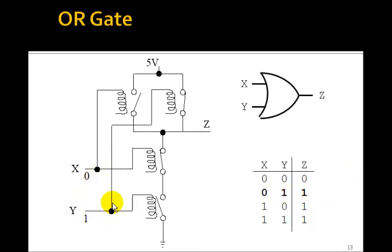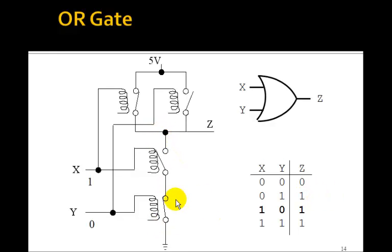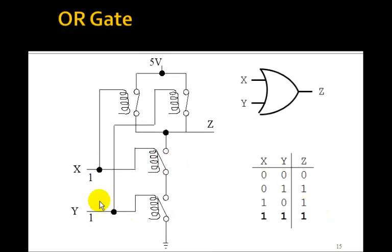If we make Y1, that closes this one, so now we have a connection up to 5 volts. It opens this one, which breaks the connection to ground, so the output would be 1. If X is 1, it closes this one, so now we have another connection to 5 volts. This one's open, no connection to ground, the output's 1. And if they're both 1, then both of these are closed. So we go to 5 volts, both of these are open, so we've implemented an OR gate.